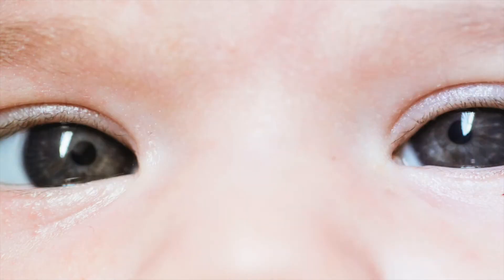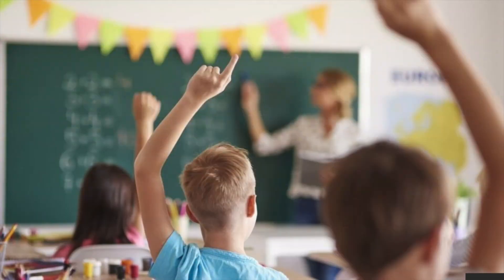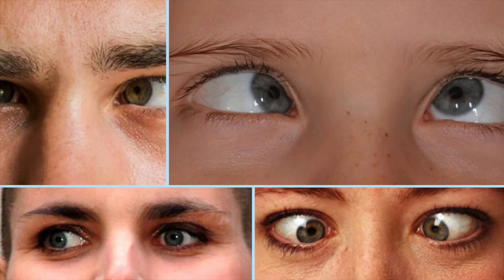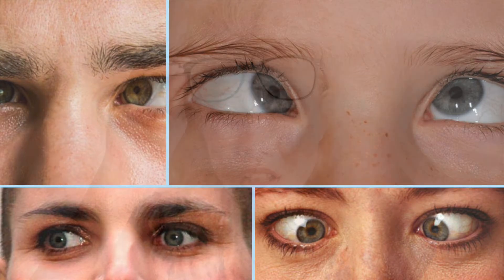Causes of amblyopia include visual problems such as nearsightedness, farsightedness, astigmatism, conditions such as a droopy eyelid or cataract, and misaligned eyes where an eye or eyes turn in, out, up, or down.